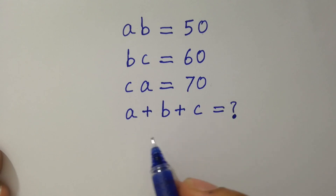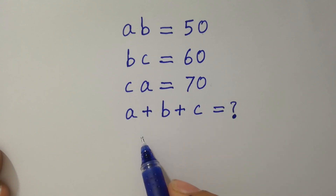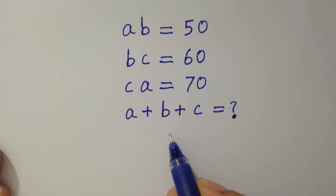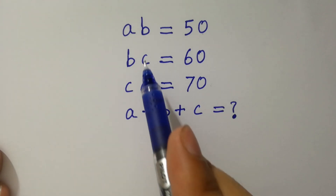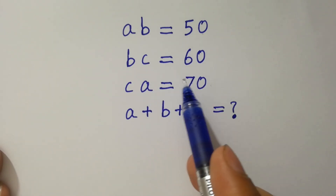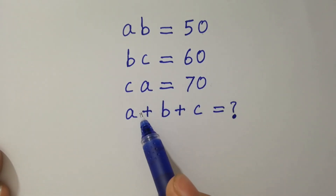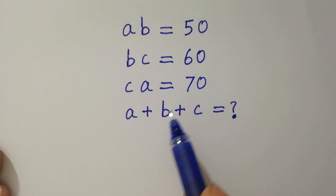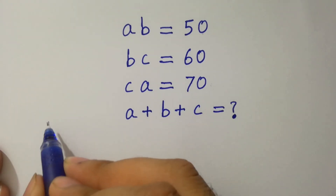Hello friends. Find the value of a plus b plus c if ab equals 50, bc equals 60, and ca equals 70. Let's have a solution.